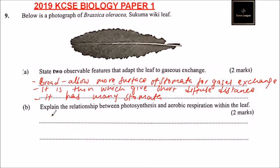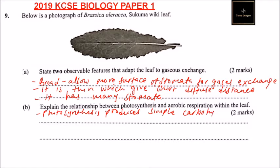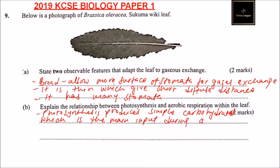The relationship between photosynthesis and aerobic respiration within the leaf: we can say photosynthesis produces simple carbohydrates, which is the main input during aerobic respiration.